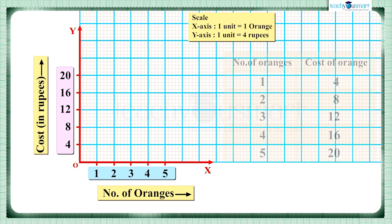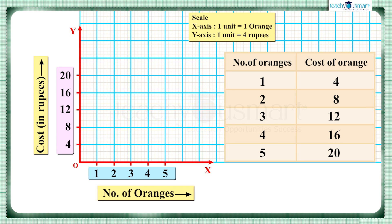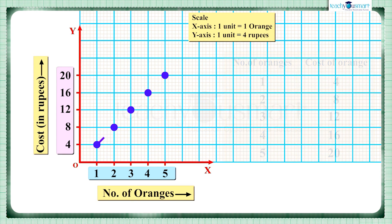Now we can plot each point as per the given information. For one orange the cost is four rupees, for two oranges the cost is eight rupees, for three oranges it is 12 rupees, for four oranges it is 16 rupees, and for five oranges it is 20 rupees. Thus we get five points on the plane and by joining them we get a straight line. Hence this is a linear graph.